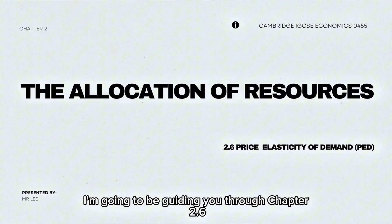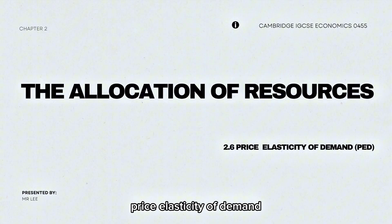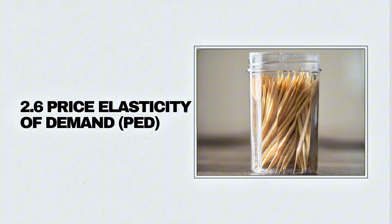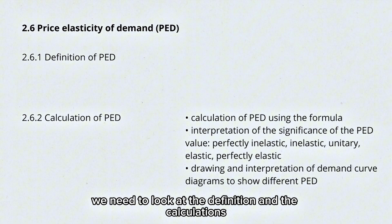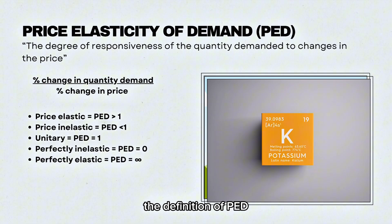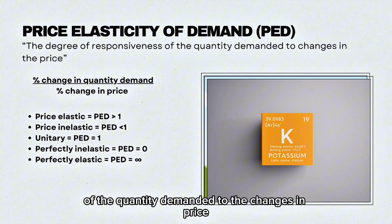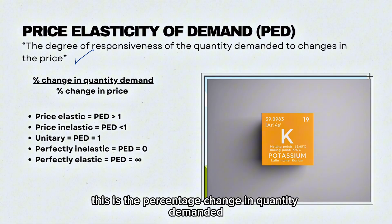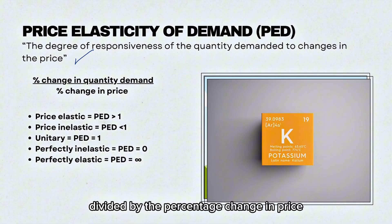In this video I'm going to be guiding you through chapter 2.6 price elasticity of demand. We need to look at the definition and the calculations of PED. The definition of PED is the degree of responsiveness of the quantity demanded to the changes in price. This is the percentage change in quantity demanded divided by the percentage change in price.